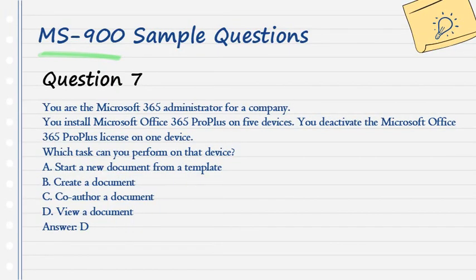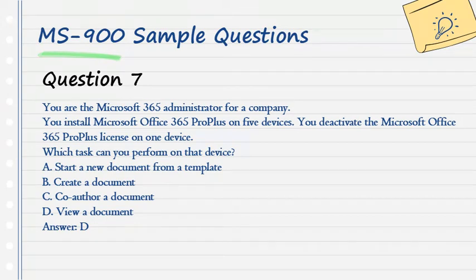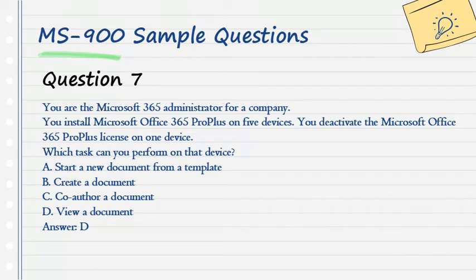Question 7. You are the Microsoft 365 administrator for a company. You install Microsoft Office 365 ProPlus on 5 devices. You deactivate the Microsoft Office 365 ProPlus license on one device. Which task can you perform on that device? A. Start a new document from a template. B. Create a document. C. Co-author a document. D. View a document. Answer: D.